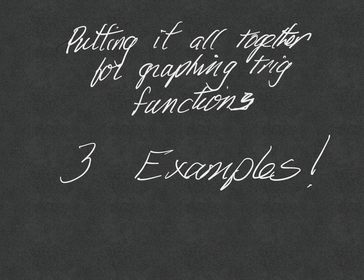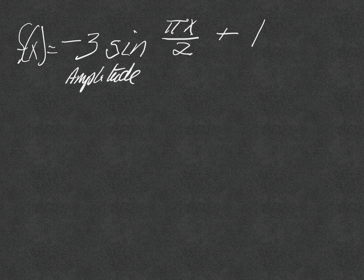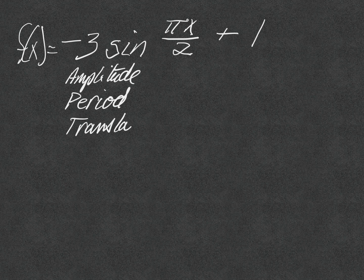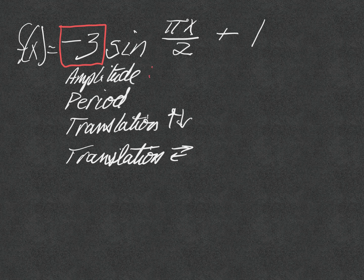Here's our first function: f(x) is equal to negative 3 sine of (π/2)x plus 1. As always when we graph, we need to find the amplitude, the period, the up-down translation, and the left-right translation. The amplitude comes from the coefficient on the trig function, so our amplitude is 3, but it's reflected.